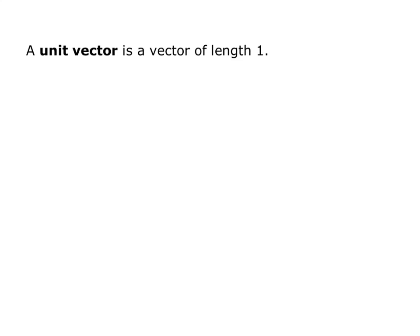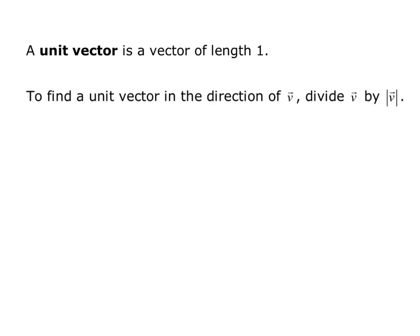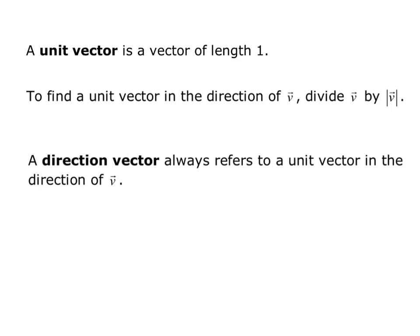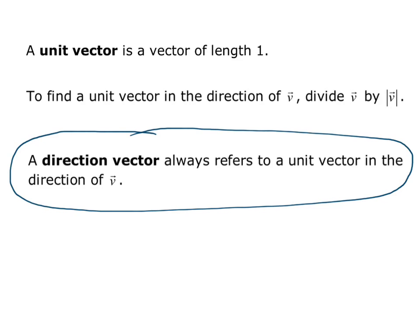A unit vector is a vector of length 1. To find a unit vector in the direction of V, divide V by the magnitude of V — dividing the vector by its length makes its length 1. A direction vector always refers to a unit vector in the direction of V. This is important because several homework problems ask for a direction vector without specifying a unit vector, but direction vector is defined to be a unit vector.